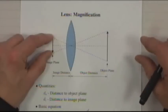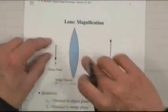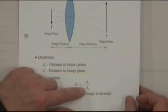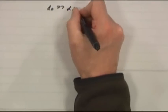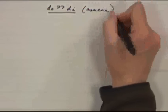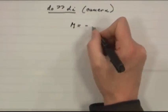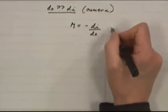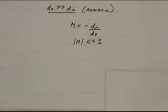The magnification M equals −D_I / D_O. The negative sign indicates the image is flipped upside down. If D_O is much greater than D_I, as in a point-and-shoot camera, then the absolute value of M is much less than one — the image is reduced. If on the other hand D_I is much greater than D_O, then the absolute value of M is much greater than one, giving you actual magnification.